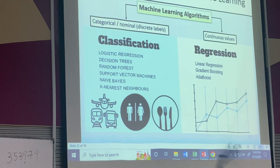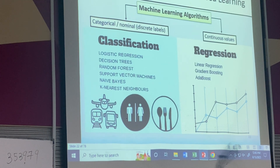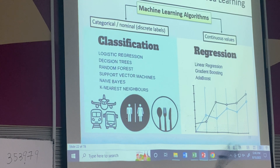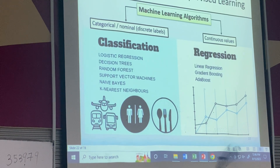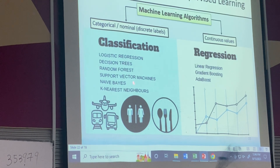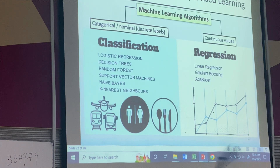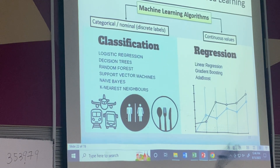There are two types of supervised machine learning outputs. The first deals with continuous values — algorithms like linear regression, ADA boost, and gradient boosting. The second deals with categorical or discrete labels — for classification you use algorithms like logistic regression, decision tree, support vector machine, naïve Bayes, or K-nearest neighbors. You must use the correct algorithm for the correct application — you can't use decision tree for continuous values or linear regression for classification.